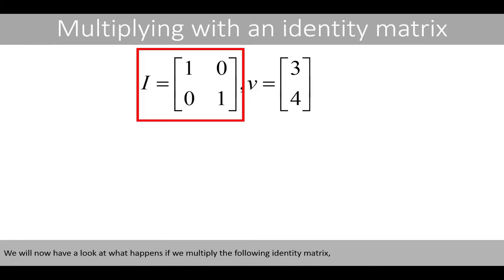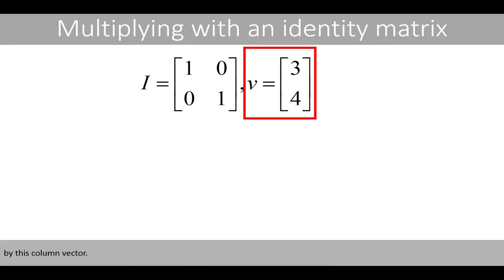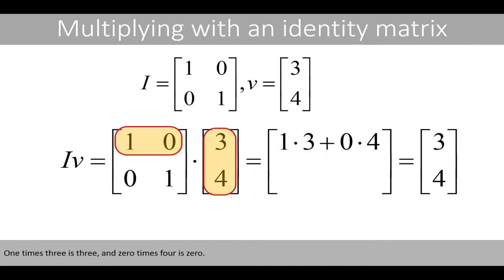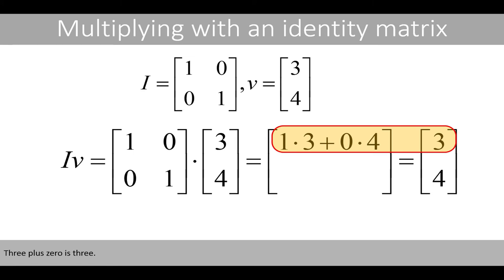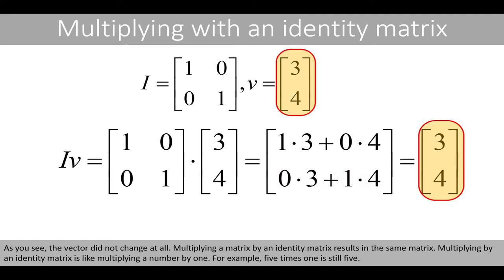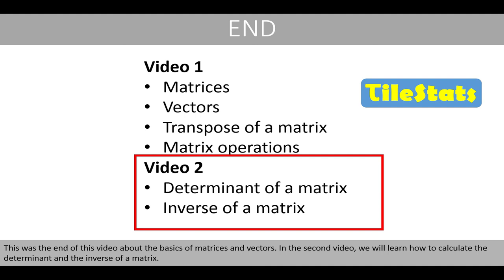We will now look at what happens if we multiply the identity matrix by a column vector. As you see, the vector did not change at all. Multiplying a matrix by an identity matrix results in the same matrix — this is like multiplying a number by 1; for example, 5 times 1 is still 5. This was the end of this video about the basics of matrices and vectors. In the second video, we will learn how to calculate the determinant and the inverse of a matrix.